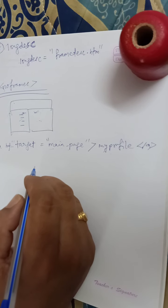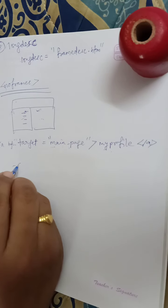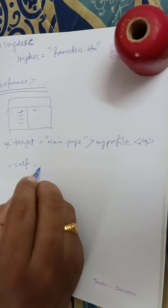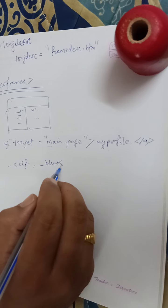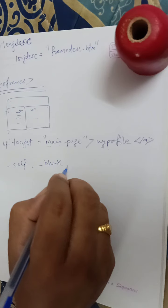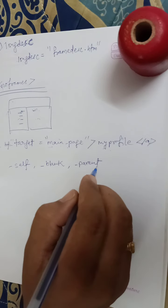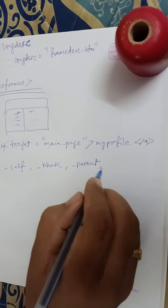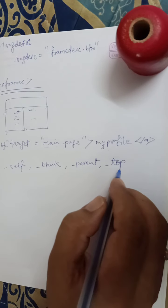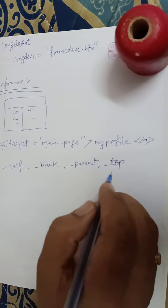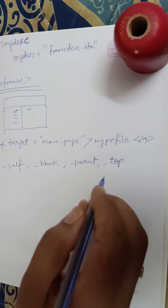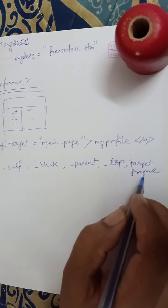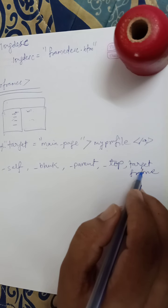The target attribute can also take special values: '_self' loads the page into the current frame itself; '_blank' loads the page in a new browser window; '_parent' loads the page into the parent window, which in the case of a single frameset is the main browser window; '_top' loads the page into the browser window replacing any current frames; or you can mention a specific target frame name to load the page into that frame.